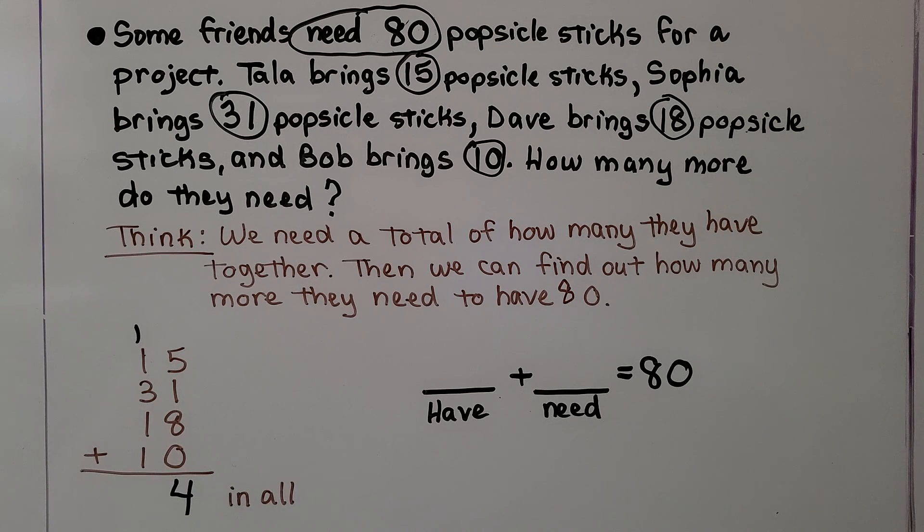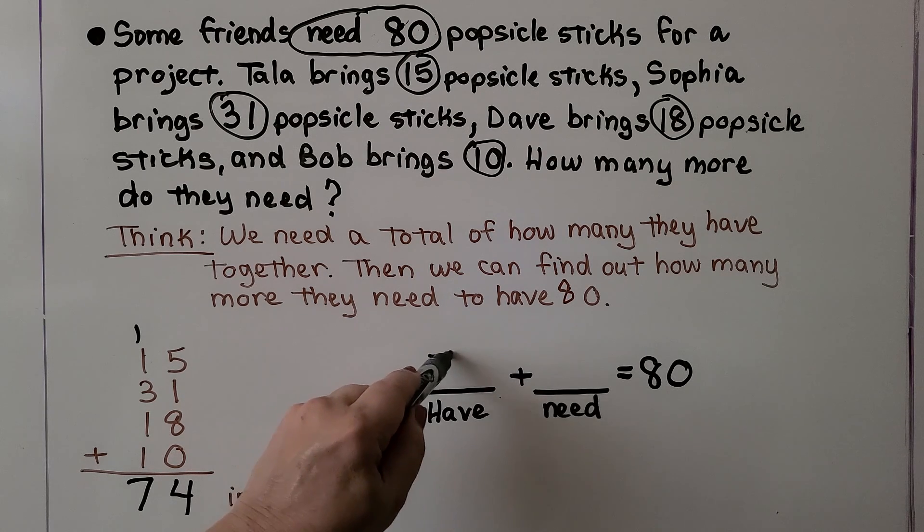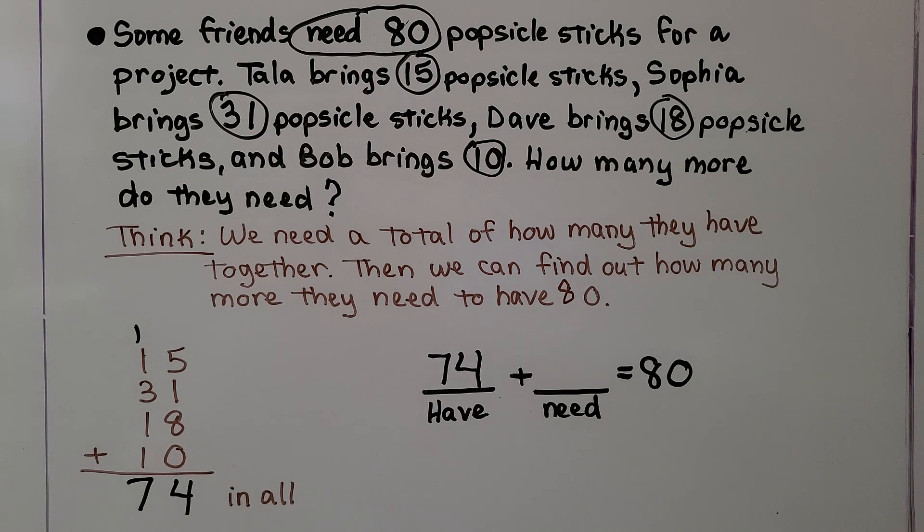Now we add the tens. 3, 4, 5, 6, 7. So together they have 74. They need 80. Do you know how many more they need?